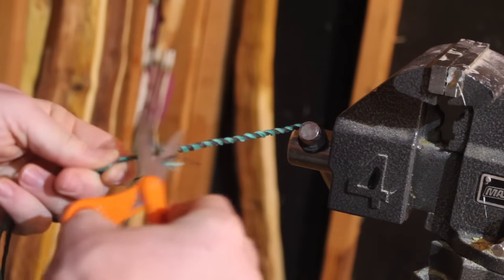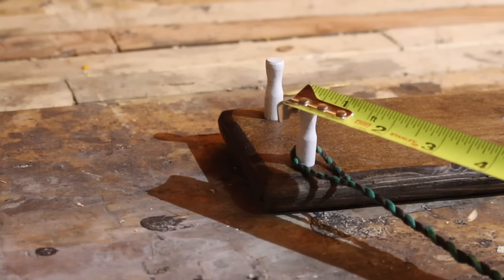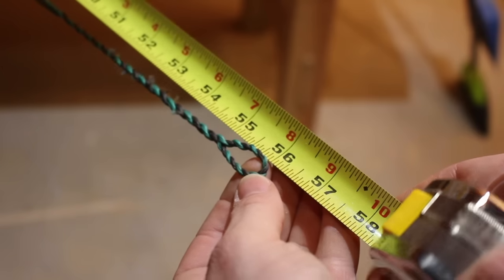All right, we are almost done with this string. I just trim up some of the tag ends and then I twist the full string just to give it a little bit of twist and then I check my distance. When we started, we set out to get a 56 inch string and it looks like we nailed it.